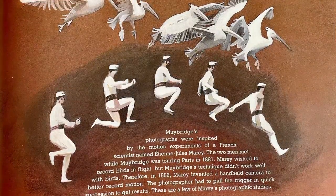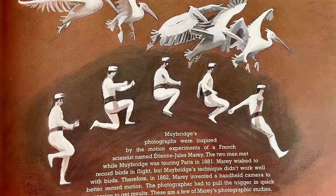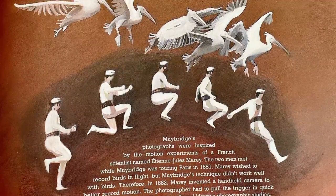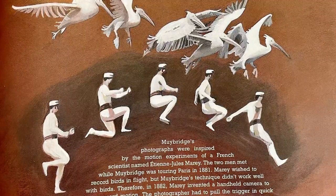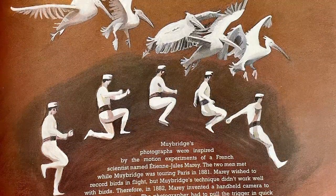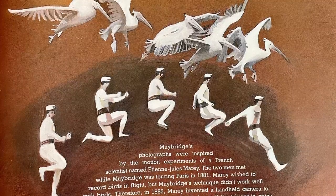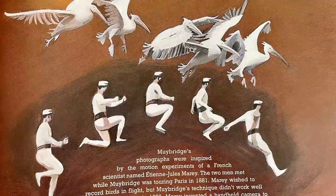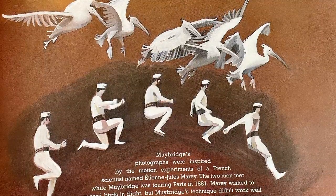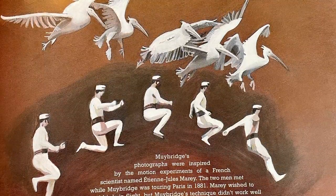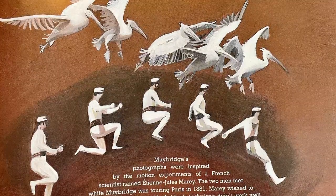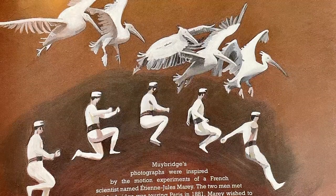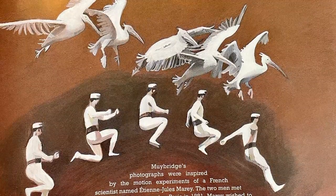Muybridge's photographs were inspired by the motion experiments of a French scientist named Étienne-Jules Marey. The two men met while Muybridge was touring Paris in 1881. Marey wished to record birds in flight, but Muybridge's technique didn't seem to work well with birds. Therefore, in 1882, Marey invented a handheld camera to better record motion. The photographer had to pull the trigger in quick succession to get results. These are a few of Marey's photographic studies.